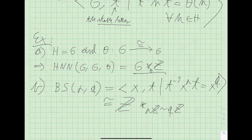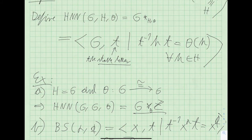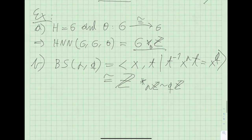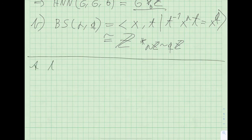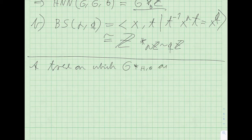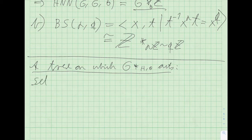We see that a Baumslag-Solitar group is nothing but an HNN extension of the integers relative to the subgroups PZ and QZ, mapping generator to generator. Now, we of course want this HNN extension to act on a tree — that's the next step.